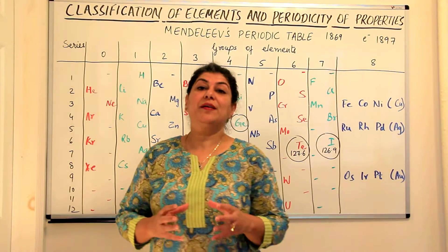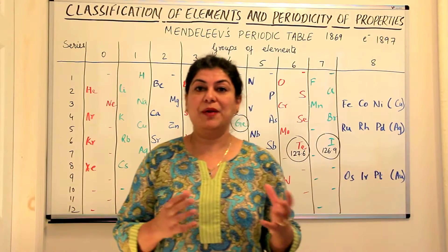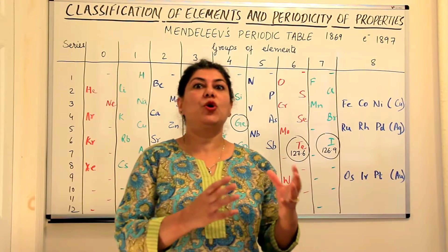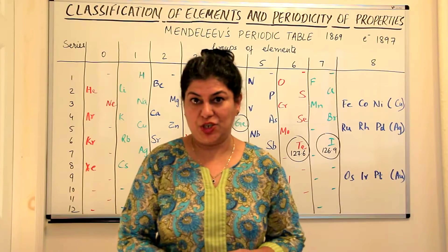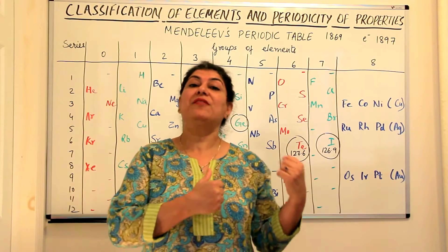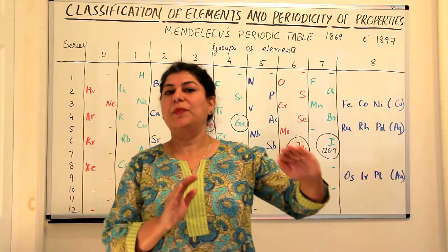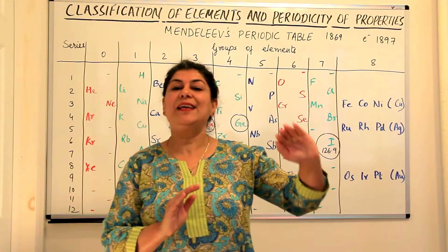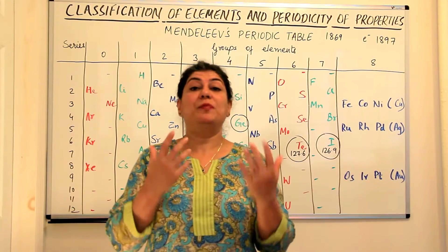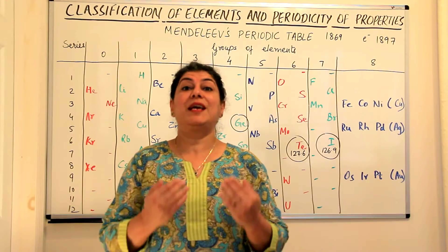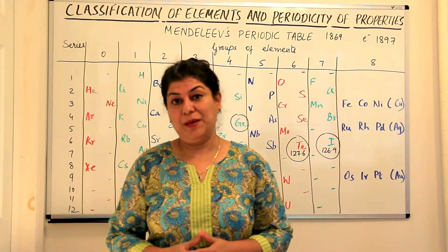But Lothar Meyer's work did not get as much acclaim — it got recognition only after Mendeleev's periodic law was published. When Mendeleev gave his periodic table, Lothar Meyer's work got less acclaim, but it was Mendeleev who had gone a step ahead of Lothar Meyer to classify the elements.